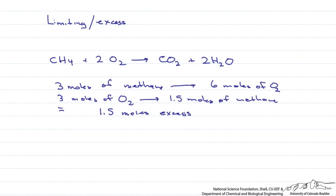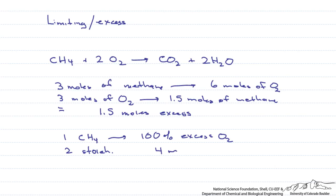By the way, when we're talking about combustion, we generally have excess oxygen in the form of air. So if we have one mole of methane and it reacts with 100% excess oxygen, 2 moles is the stoichiometric amount, so 100% excess would mean that we have 4 moles of O₂. 50% excess would mean 3 moles. What would 200% excess oxygen end up being? It's 6 moles of O₂ for 200% excess.